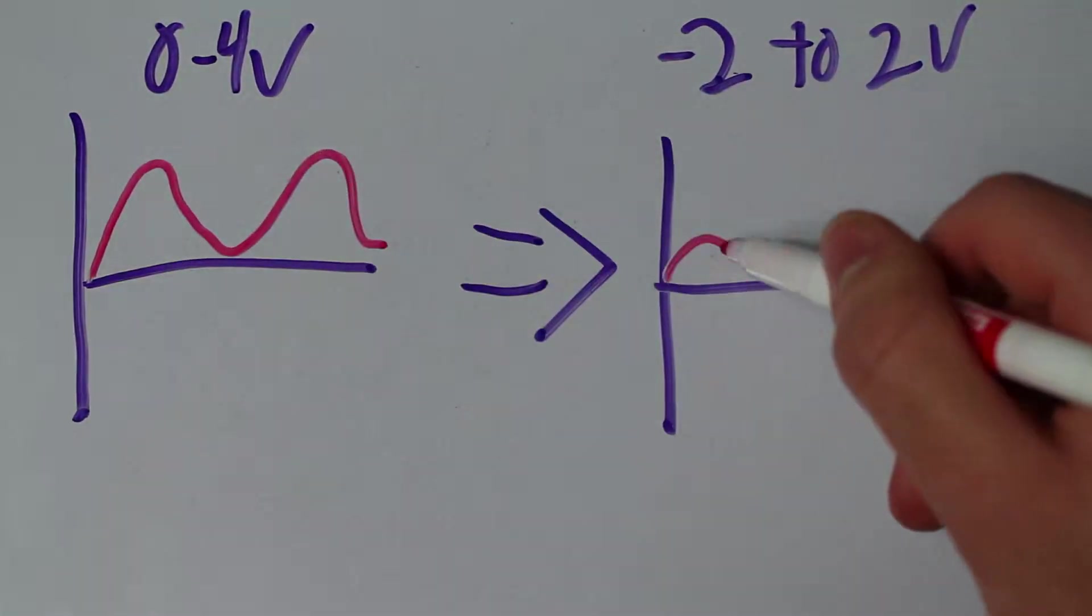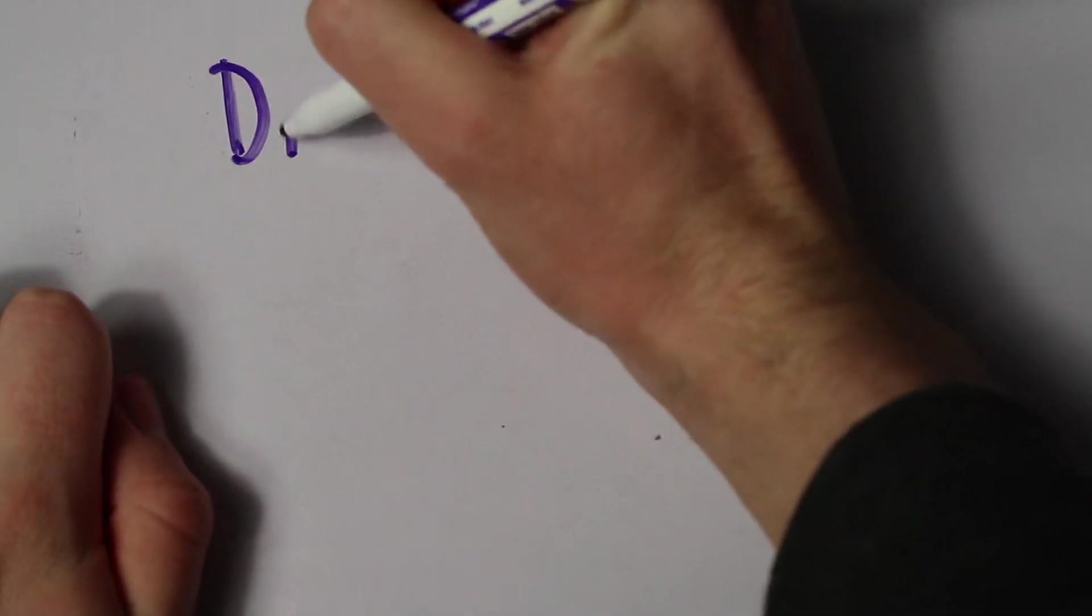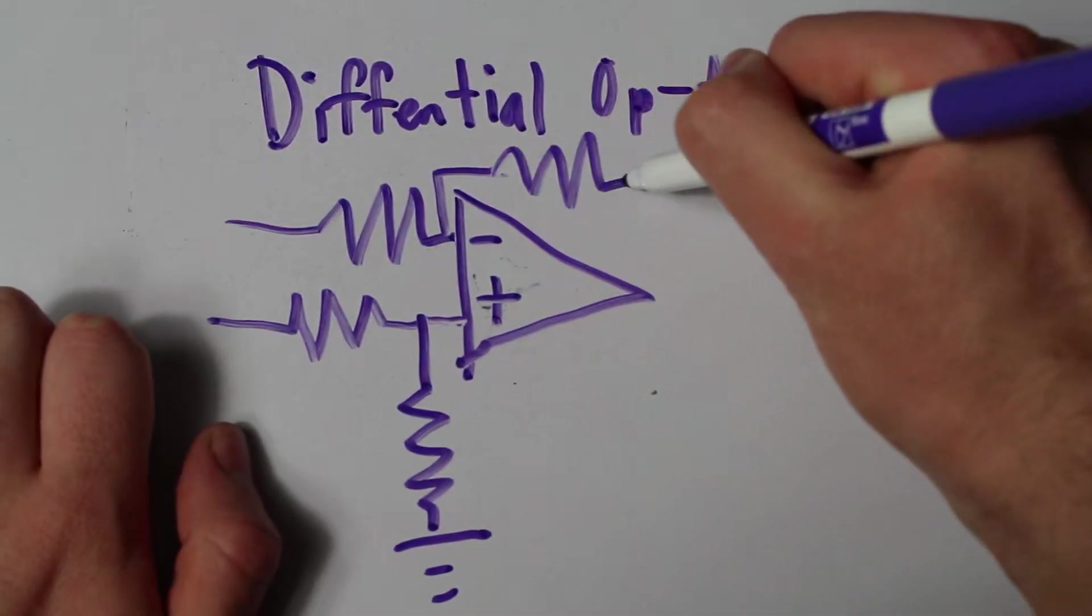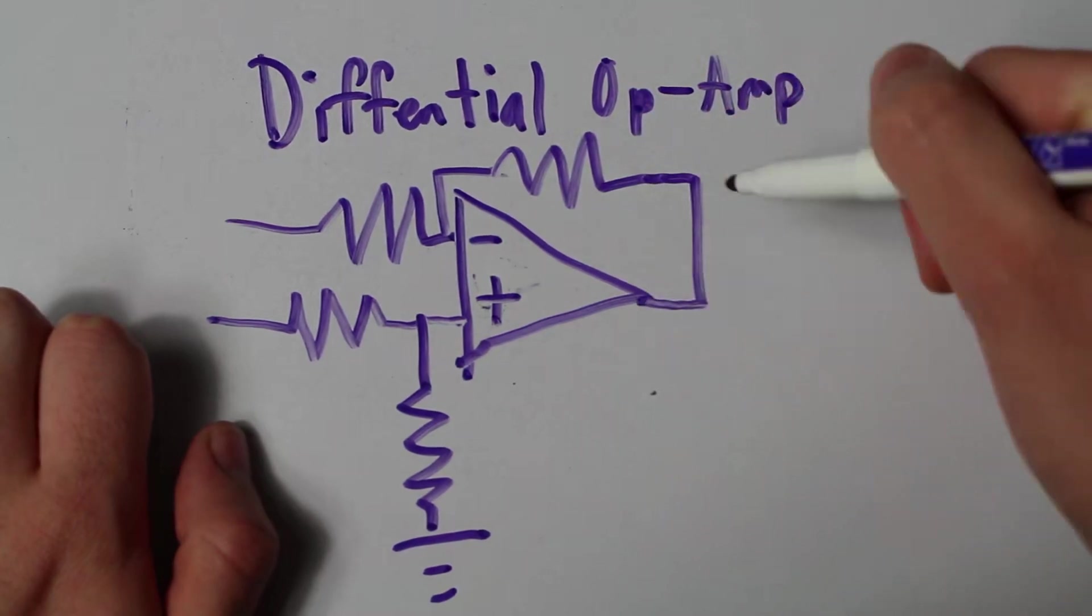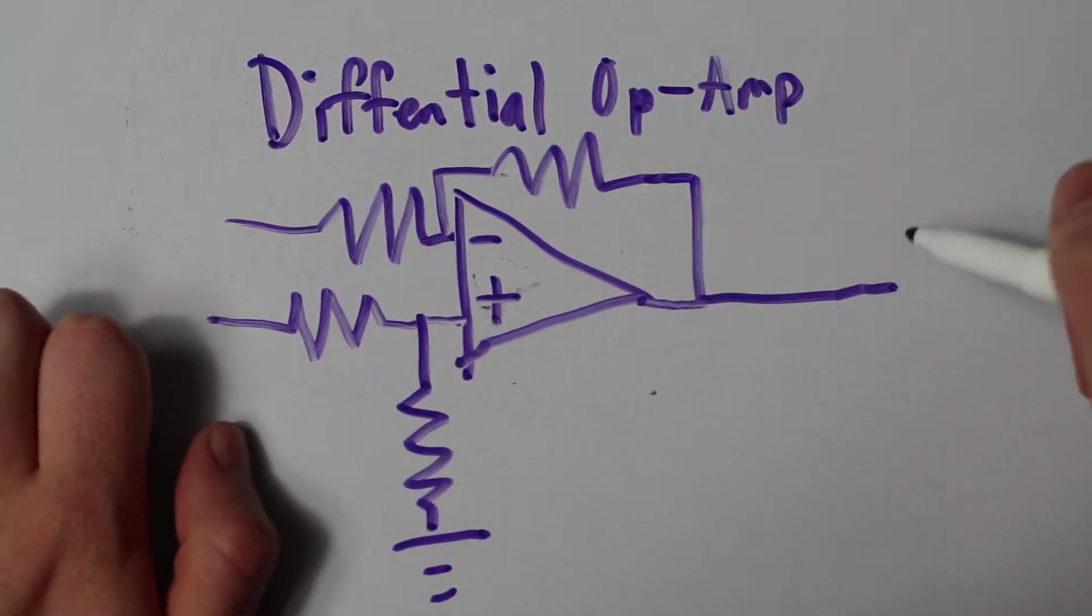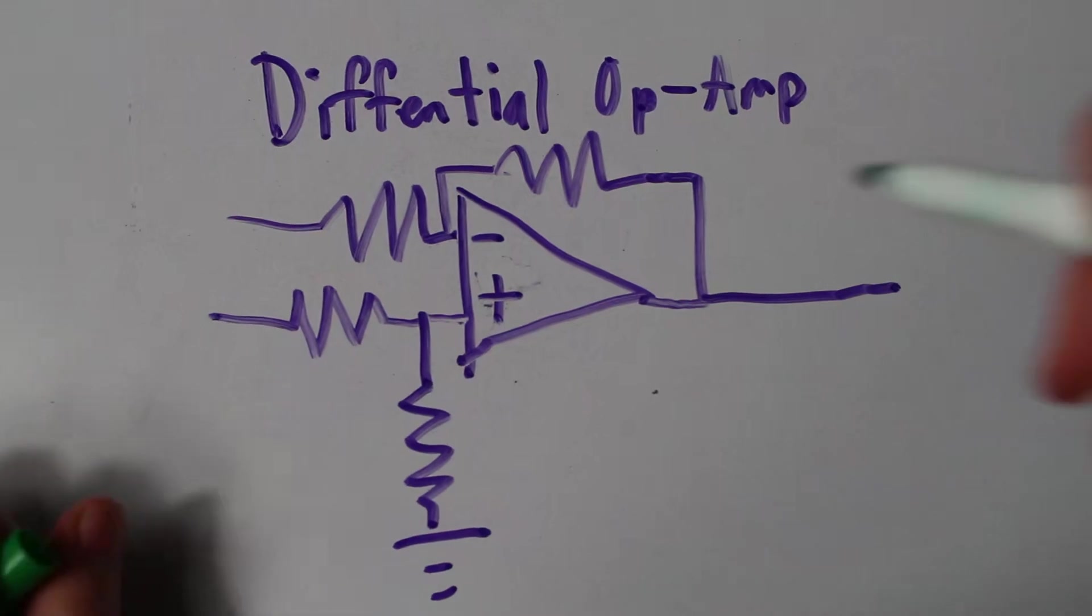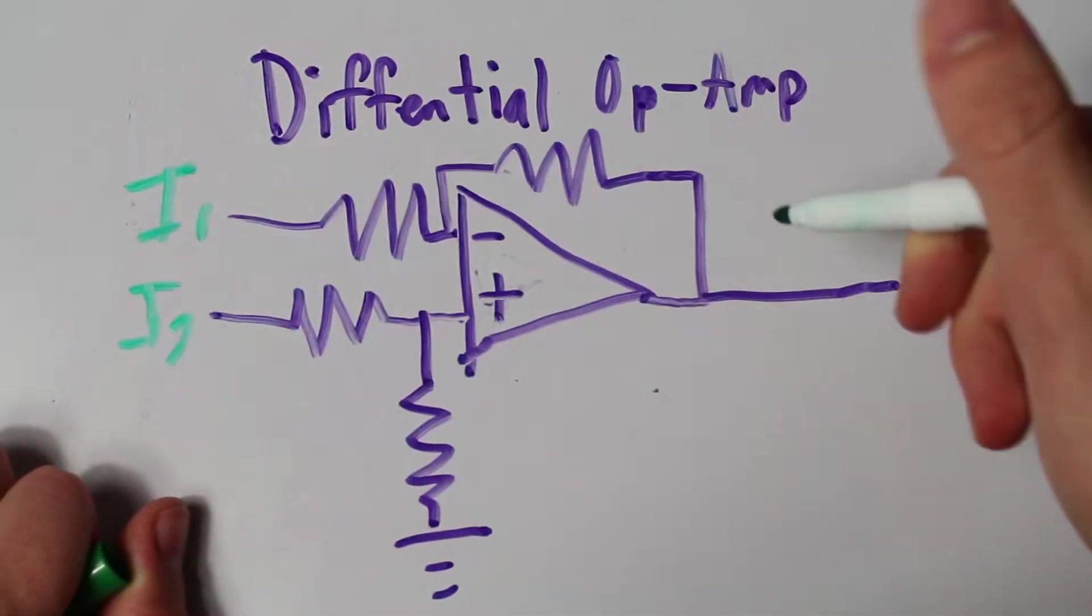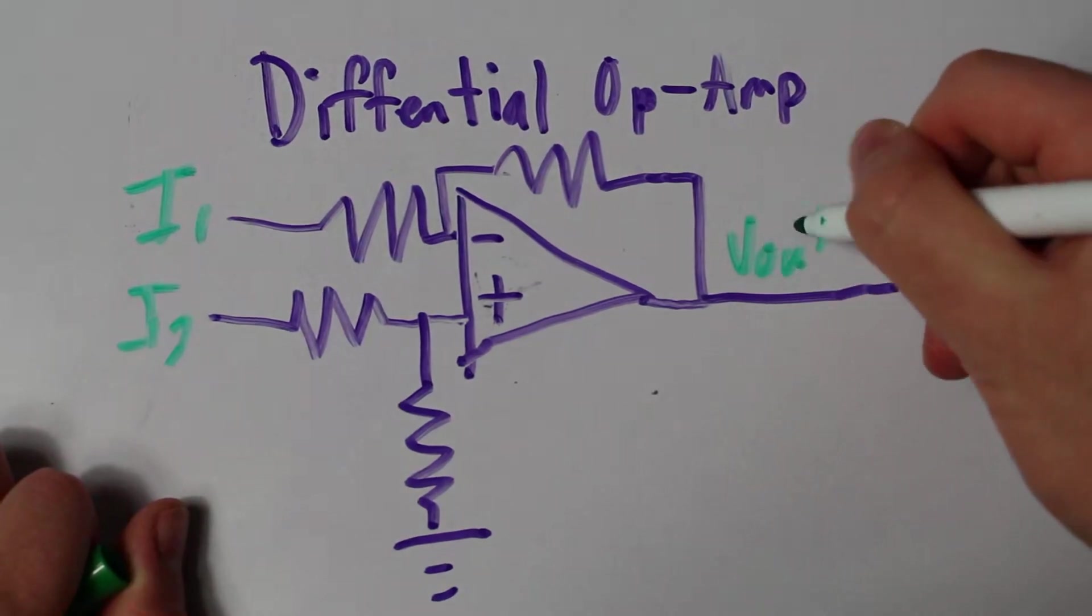For that, we can use a differential op amp to subtract 2 volts from the DAC signal. We can simply use the second op amp inside of the LM358 for this purpose. A quick rundown of differential op amps is that they return the difference between the two inputs. So if we constantly set the non-inverting input to 2 volts, the output will compare that to the inverting input.